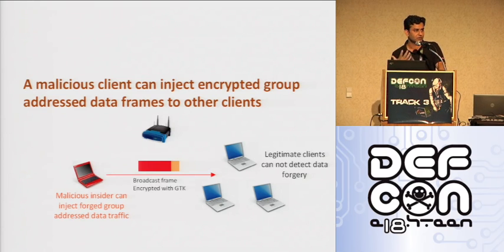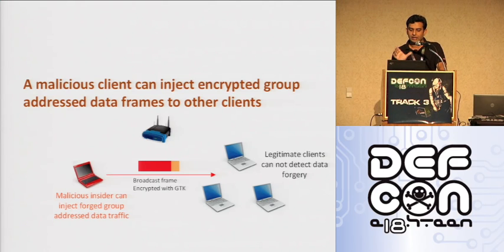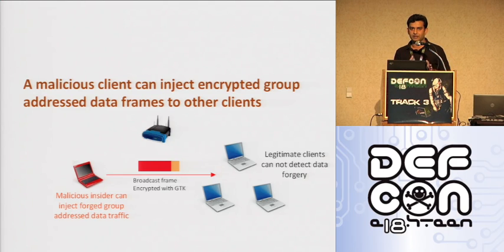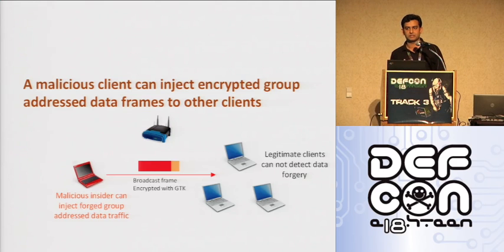But Wi-Fi client devices are programmed to receive packets from the access point, not from other Wi-Fi client devices. So in order to successfully deliver that packet, this insider is going to spoof the MAC address of the access point. Once the attacker sets the MAC address of the access point as the sender of that packet, all clients present in that network and associated with the same access point are going to receive and decrypt it successfully. This means a malicious insider has access to a broadcast frame which it can create, generate, and send.